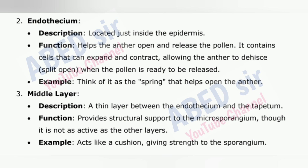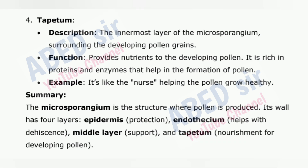3. Middle layer — a thin layer between the endothesium and the tapetum. Function: provides structural support to the microsporangium, though it is not as active as the other layers. Example: acts like a cushion, giving strength to the sporangium. 4. Tapetum — the innermost layer of the microsporangium, surrounding the developing pollen grains. Function: provides nutrients to the developing pollen. It is rich in proteins and enzymes that help in the formation of pollen. Example: it's like the nurse helping the pollen grow healthy.